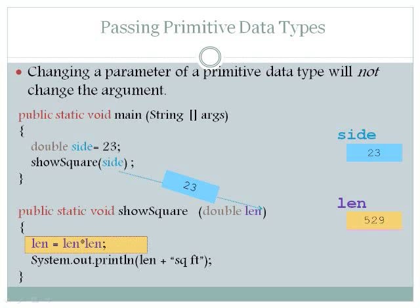However, in showSquare, we create lin variable being side times side, or lin by lin. This does not update the value inside, because side and lin remain distinct memory addresses.